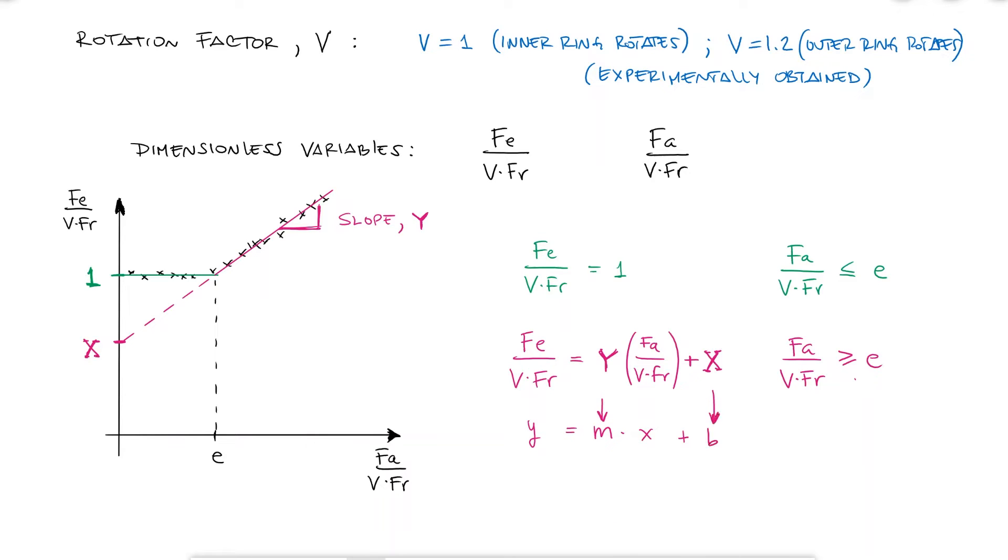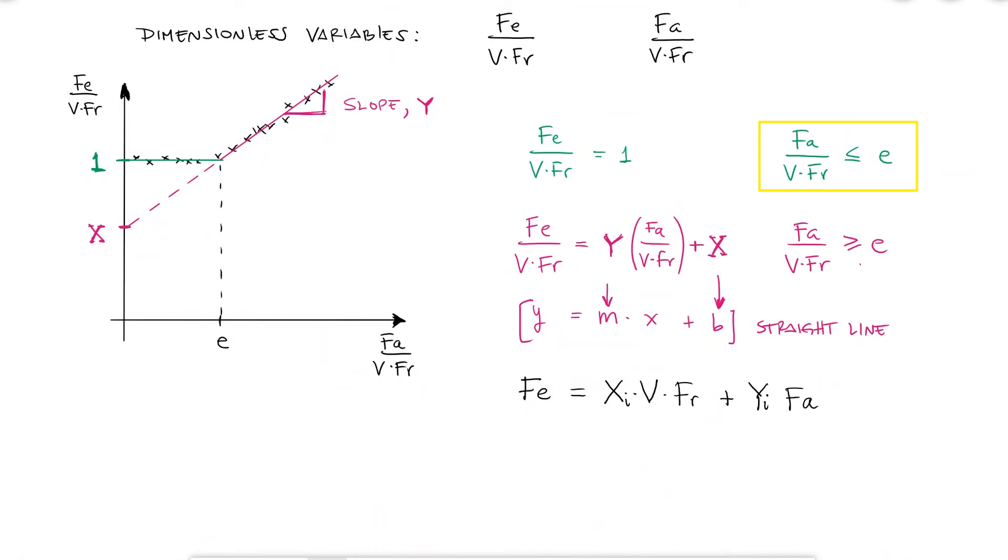Combining these two equations into one, we can write them as Fe equals XI V FR plus YI FA. For FA over VFR less than E, XI would be 1 and YI would be 0. For FA over VFR greater than E, XI is 0.56 and the slope will change depending on the basic static loading C0.